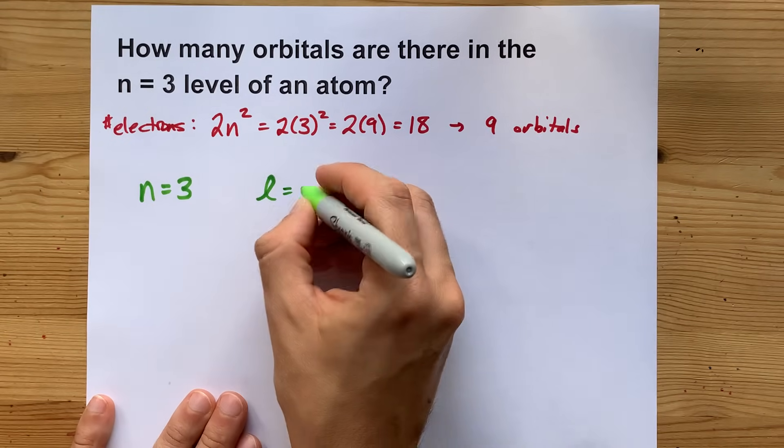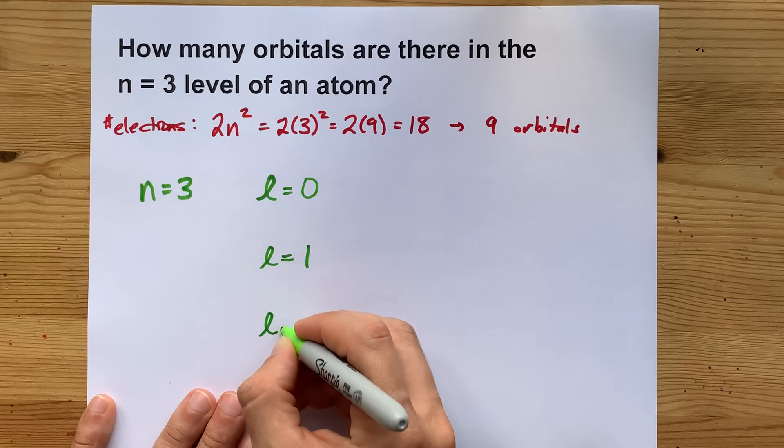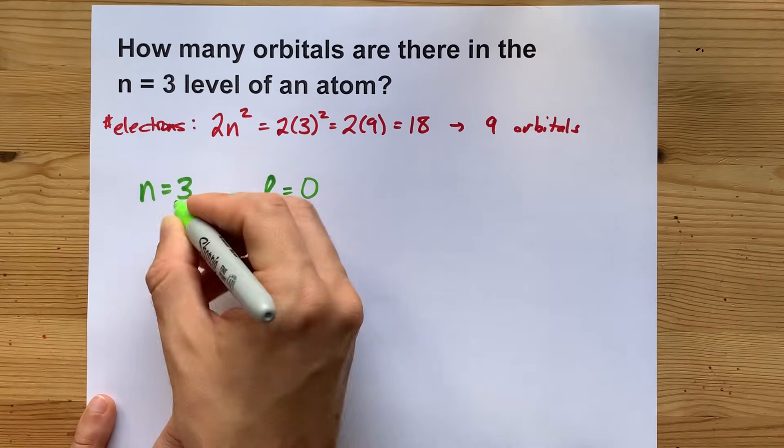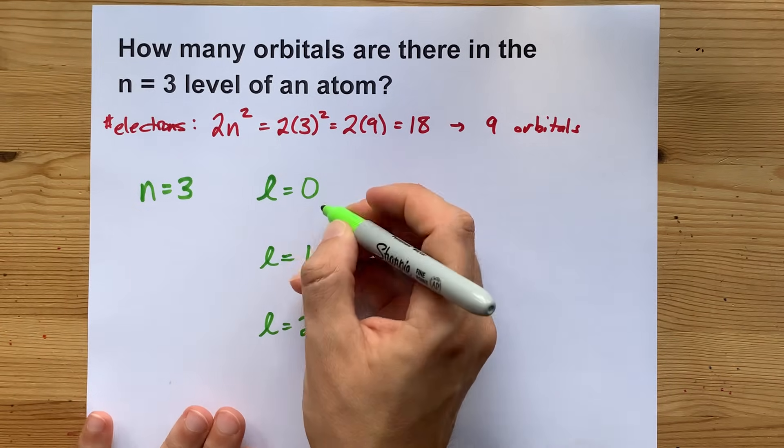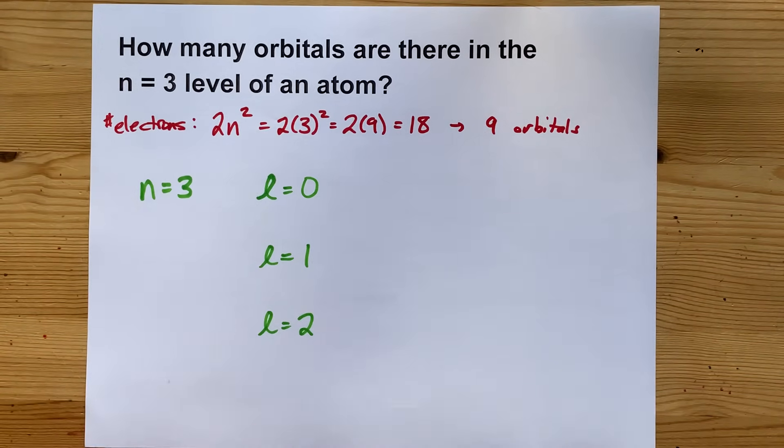What that means is that for n equals 3, L can be 0 or 1 or 2. And for any n that you're ever given, you count from 0 up to 1 less than that. Those are the possible L's.